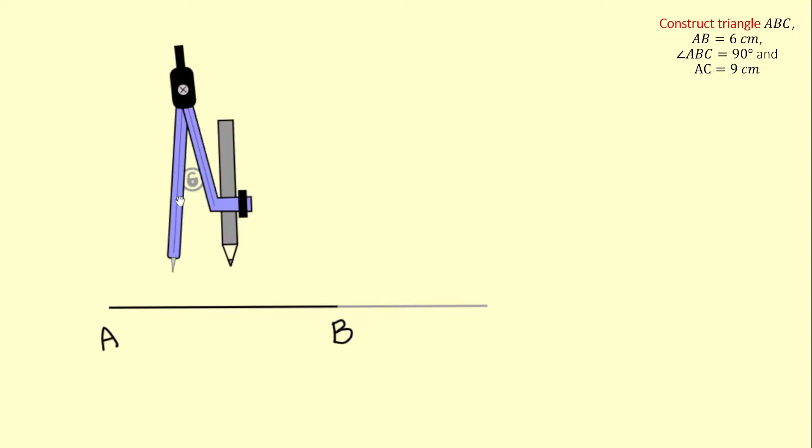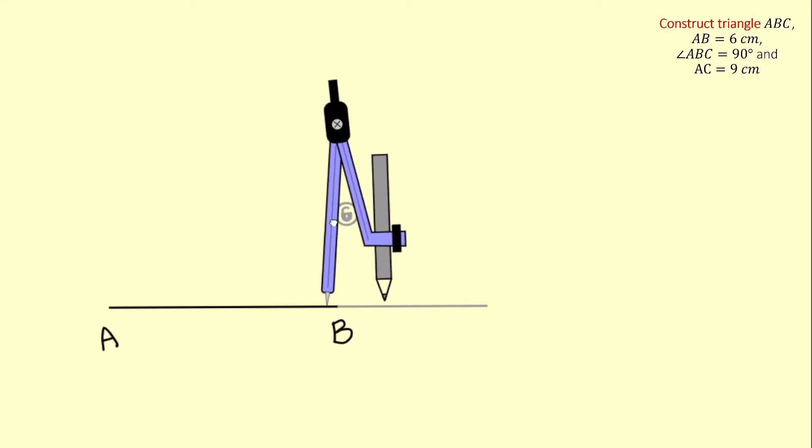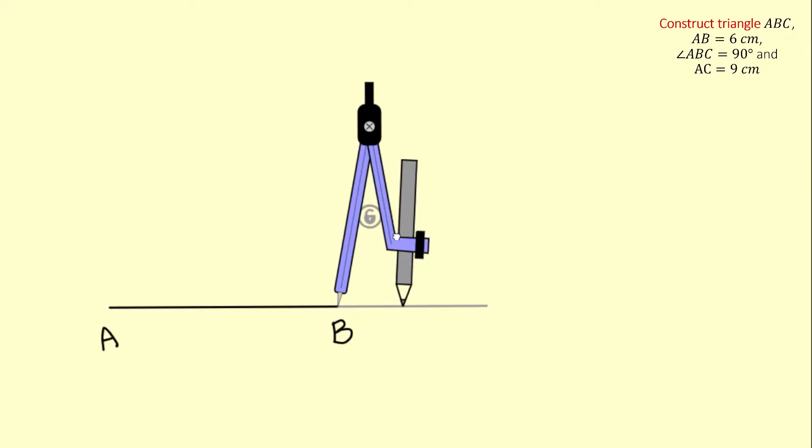Now I will place the needle of my compass on point B. I will stretch my compass a little bit so that I can make an arc that intersects my line on both sides of point B. I am going to make an arc on this side of B.